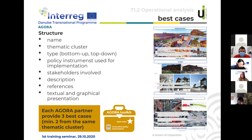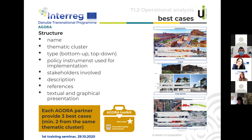As part of the operational analysis, there is also a task devoted to the selection of best cases — some of which have already been presented. Both scientific and territorial partners need to prepare a compendium of best cases. Each Agora partner is asked to provide a minimum of three best cases, with at least two from the same thematic cluster. For example, two cases from one cluster and one from an industrial cluster, or a combination.